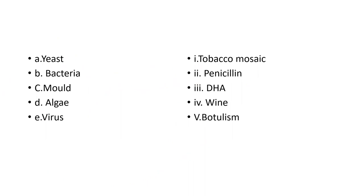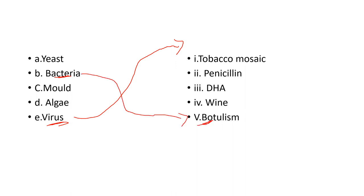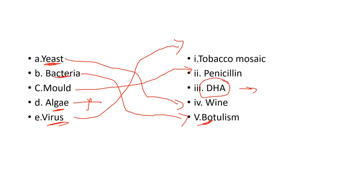For microbiology: virus is associated with TMV (tobacco mosaic virus). Bacteria — Clostridium causes botulism. Mold is associated with penicillin. Yeast is responsible for wine manufacture. Algae is associated with DHA (omega-3 acid), which is present in good quality algae.